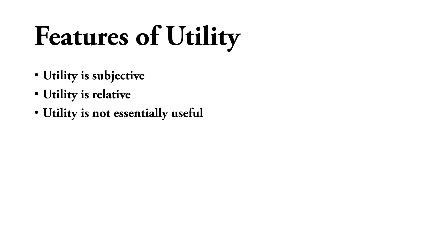Another important sub-topic under utility is Features of Utility. The first feature is: utility is subjective. The satisfaction that each person gets is different. For example, if five friends decide to go to the market and drink juice, one friend who has already eaten at home may not enjoy the juice as much. But a friend who has been at home for two months due to Corona and is drinking juice after two months — obviously that person will get more satisfaction.